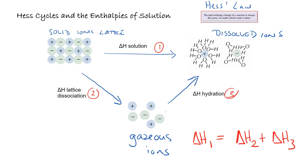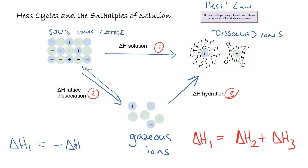Notice that this could be different if we had lattice formation energy instead. In that case, enthalpy change 1 would be equal to minus ΔH₂ plus ΔH₃, which is equivalent to writing ΔH₃ minus ΔH₂.